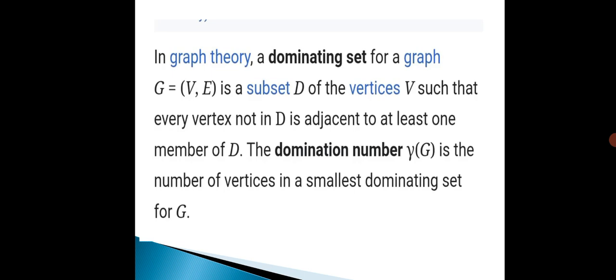For vertex domination, we have a graph G equal to V comma E, where V is the vertex set and E is the edge set. We have a subset capital D.